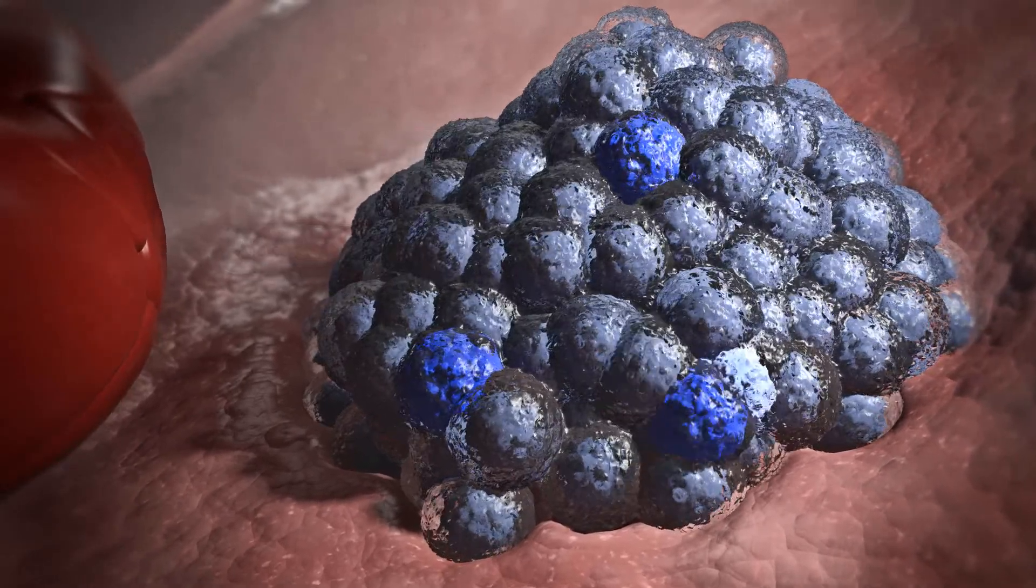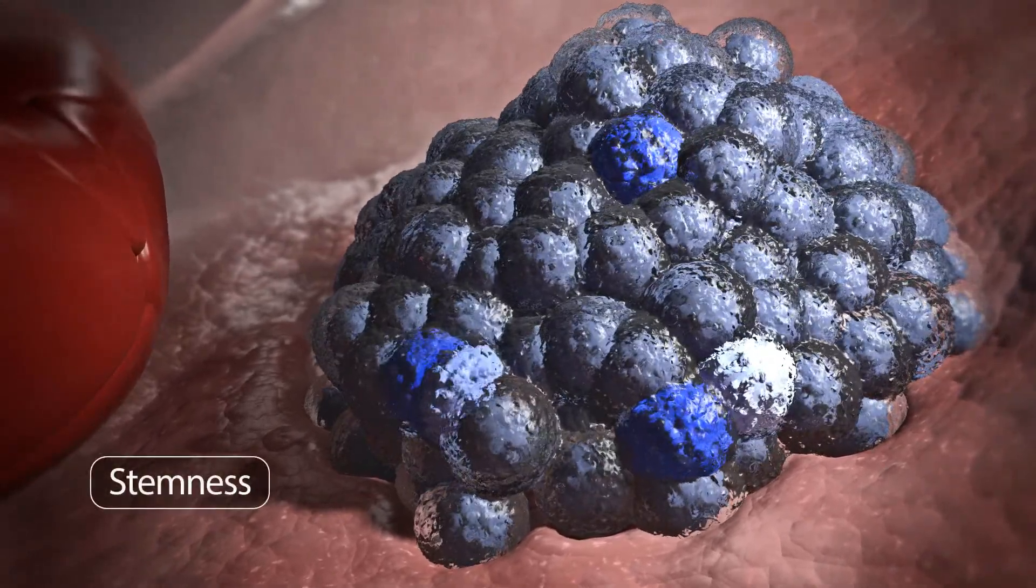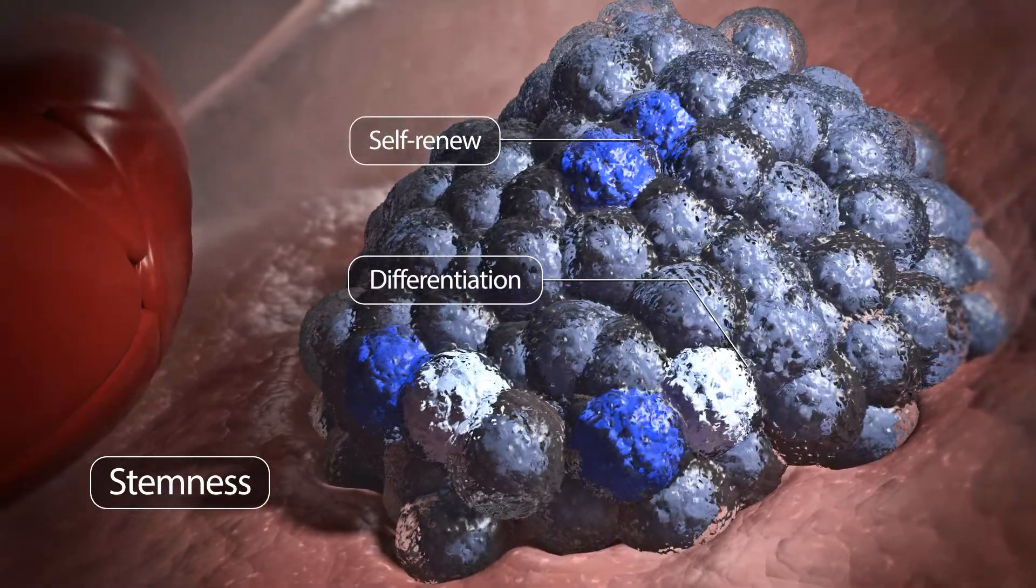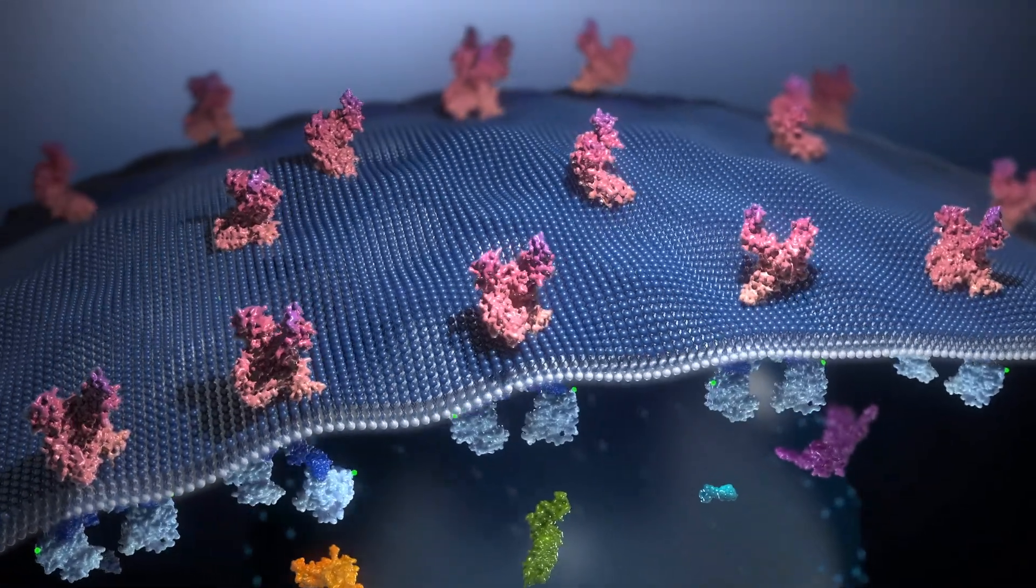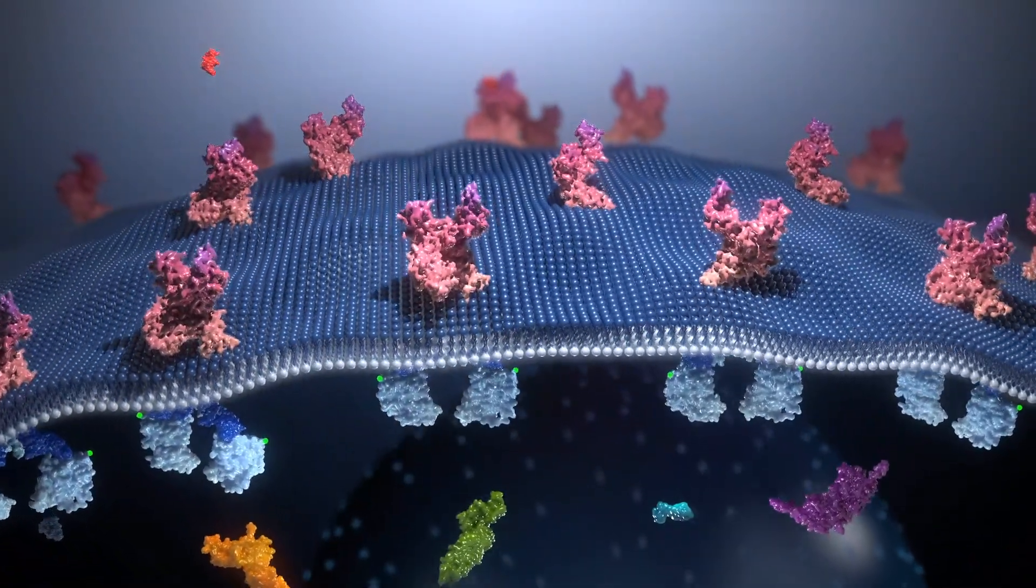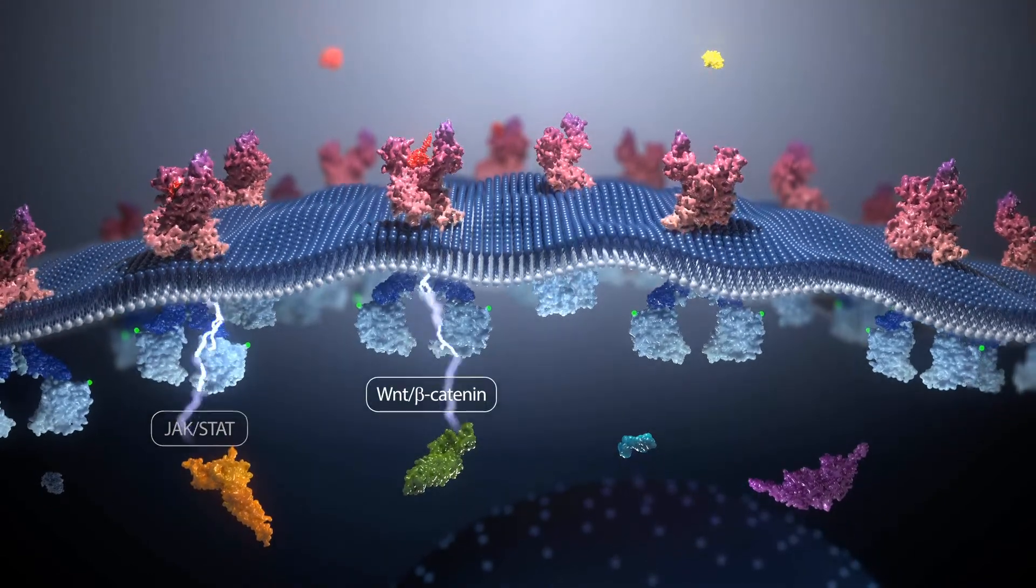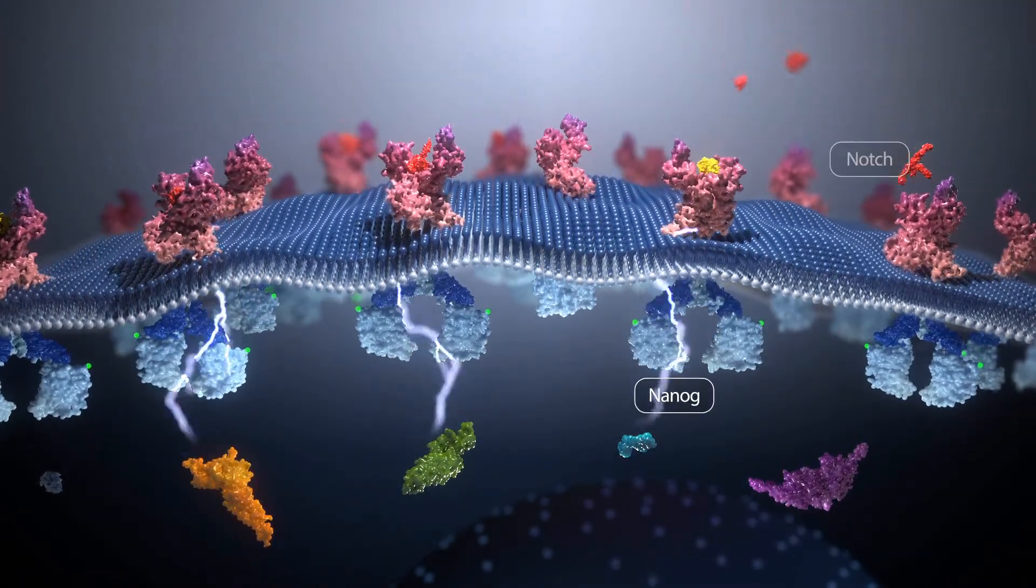These cells have the property of stemness, which is the ability to self-renew and differentiate. Stemness in cancer stem cells is maintained by signaling pathways that are over-activated, including JAK-STAT, Wnt-beta-catenin, NANOG, and NOTCH.